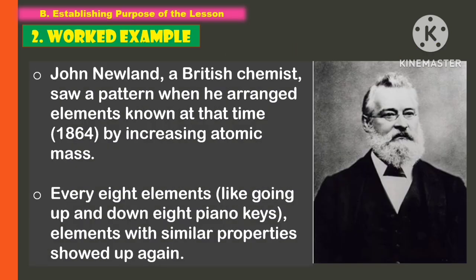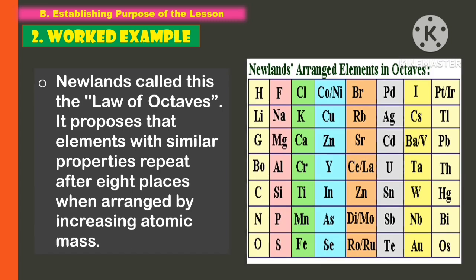John Newlands, a British chemist, saw a pattern when he arranged elements known at the time in 1864 by increasing atomic mass. Every 8 elements — like going up and down 8 piano keys — elements with similar properties showed up again. Newlands called this the Law of Octaves. It proposes that elements with similar properties repeat after 8 places when arranged by increasing atomic mass.